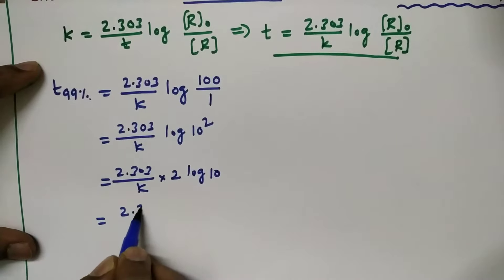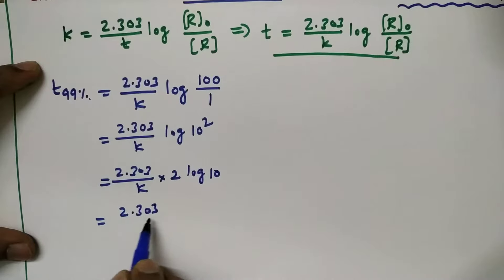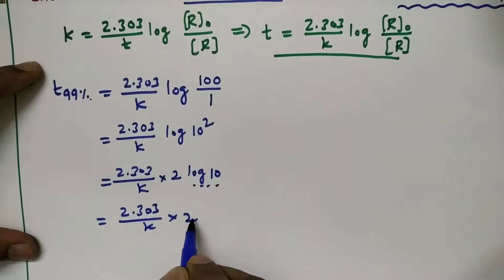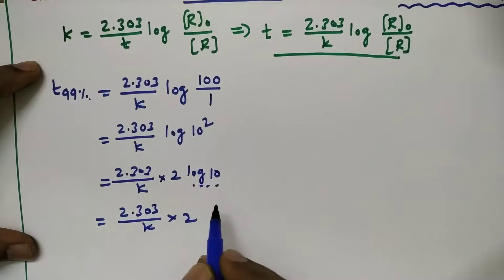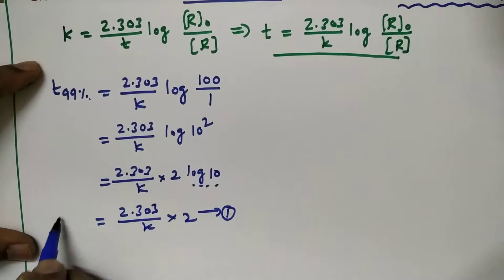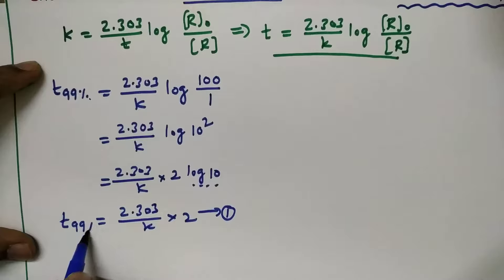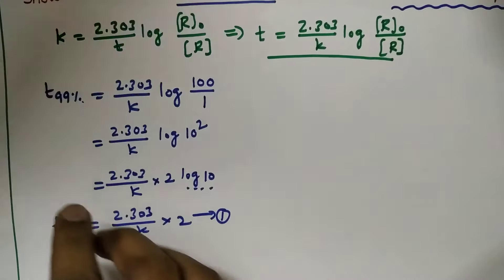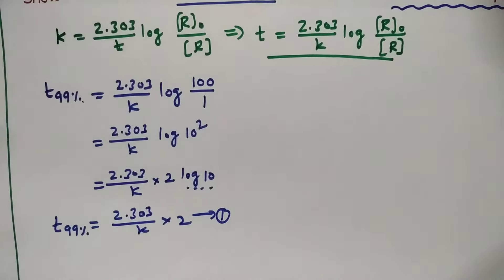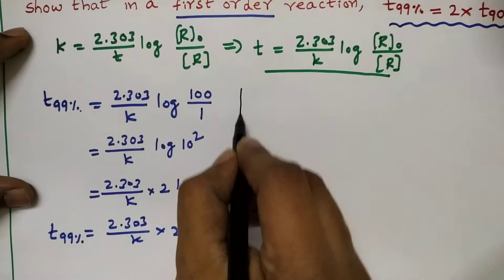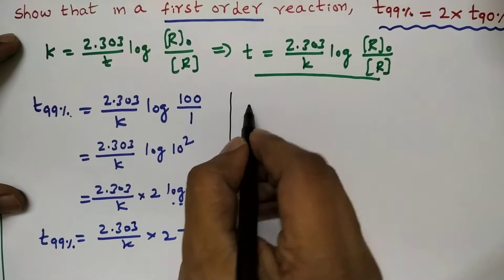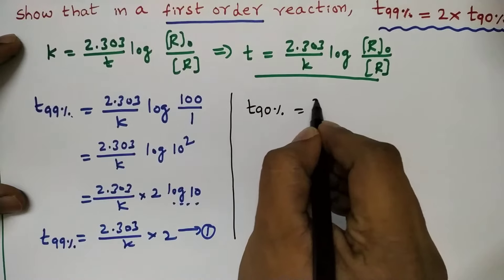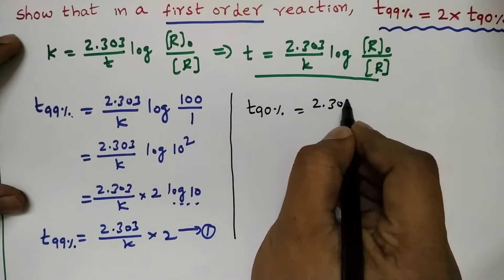This gives t99% = 2.303/k × 2 × log10, and since log10 = 1, we get t99% = 2 × 2.303/k. This is equation 1.